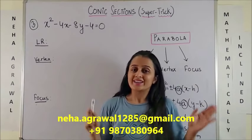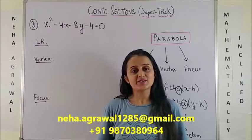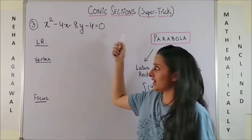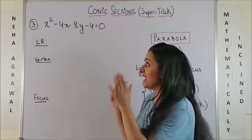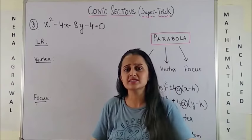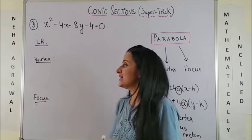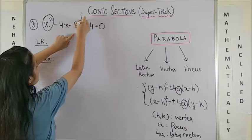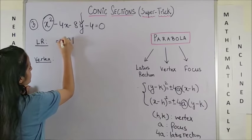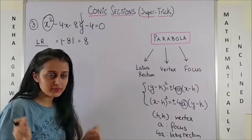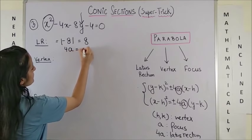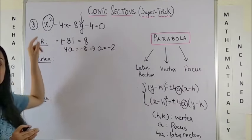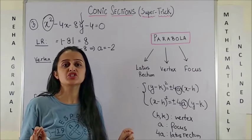Now let's take a question in terms of x². Make sure the coefficient is 1; otherwise divide the entire equation by that coefficient. For the latus rectum, since it is x², look at the coefficient of y, which is −8. The latus rectum is 8 units, and since 4a = −8, a = −2.